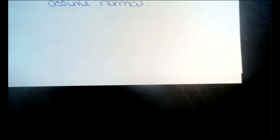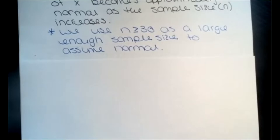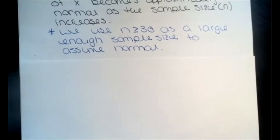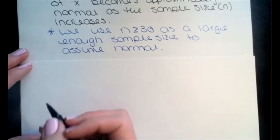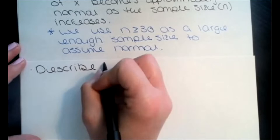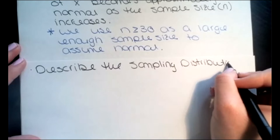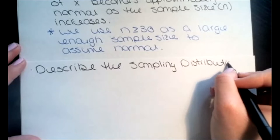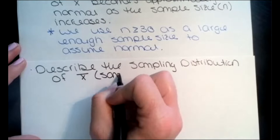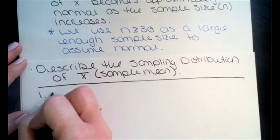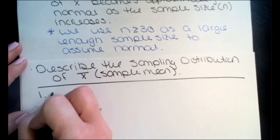Going back to chapter three, when we started talking about a distribution, we looked at three different things: shape, center, and spread. We're going to continue with that idea. Let's describe the sampling distribution of x-bar — the sample means. The first thing we're going to look at is shape.